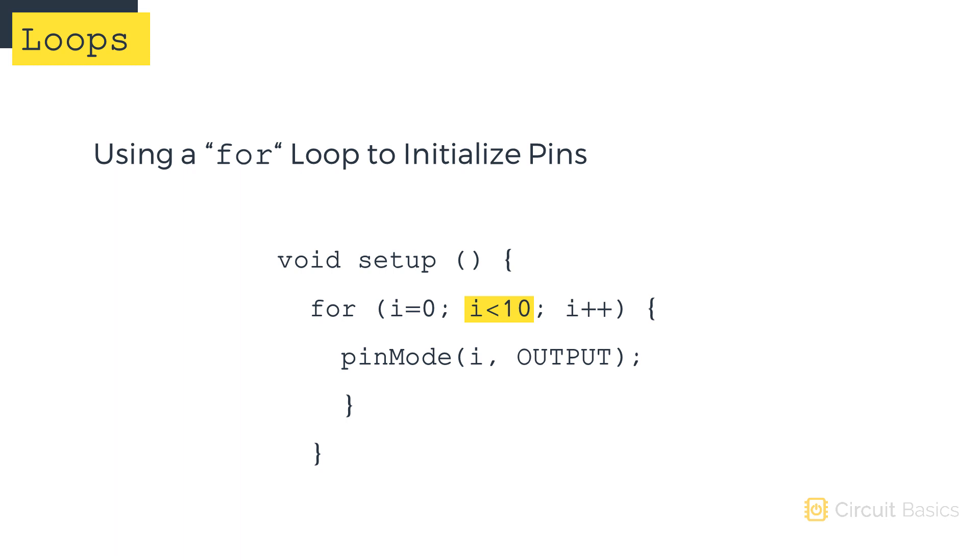The for loop will continue looping as long as the condition is true. The condition in this case is the number of pins we want to initialize. We want every pin from zero to nine to be set as an output. So the condition is i less than 10.